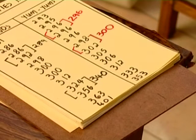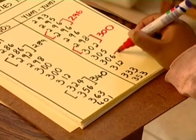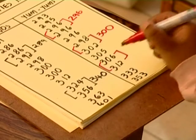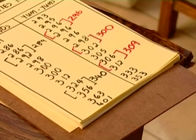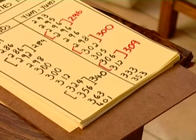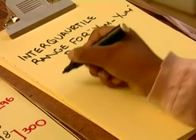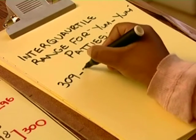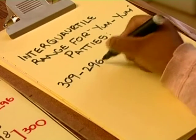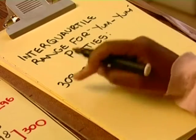Now, what about the upper quartile? To find the upper quartile, I have to use the numbers on the other side of the median. The third and fourth numbers there are 306 and 312, so the number lies between 306 and 312, which will be 309. Does this mean the interquartile range for Yum-Yums is 309 minus 296, which is 13 grams? Absolutely right.